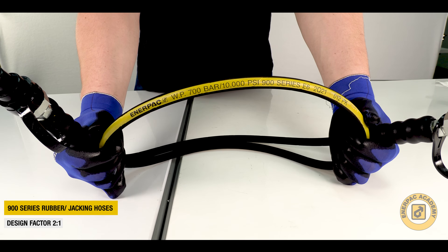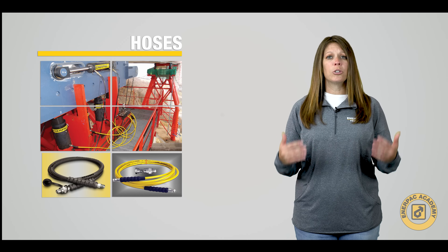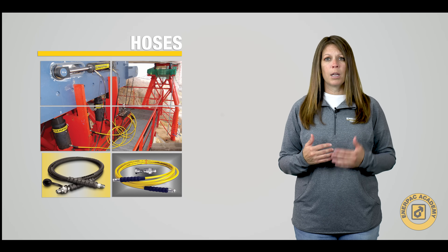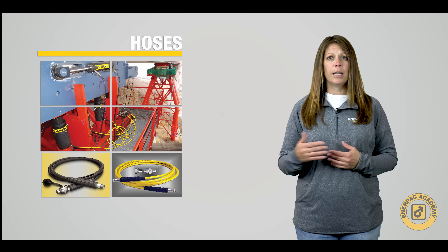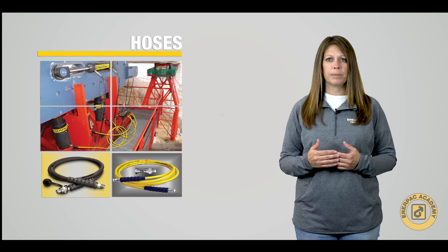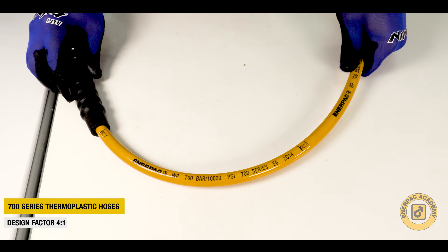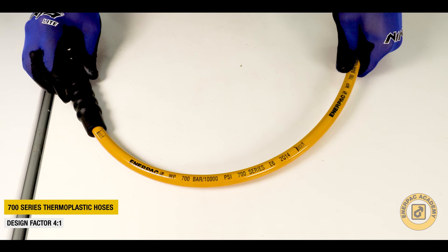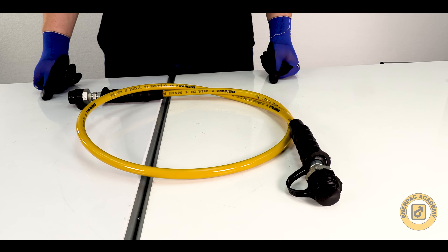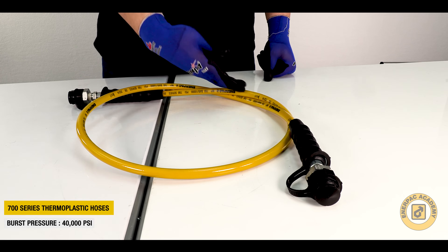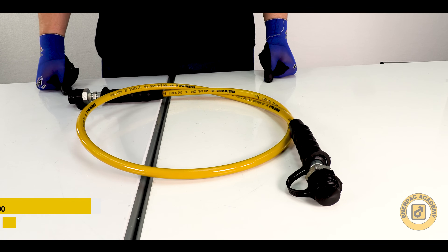The jacking hoses meet the two to one safety factor. In certain regions around the globe, a four to one safety factor is required, even for high-pressure industrial hoses. In most of these regions, the Interpac 700 series thermoplastic hoses are used to meet these requirements, as these hoses have a 40,000 psi or 2,800 bar minimum burst pressure.